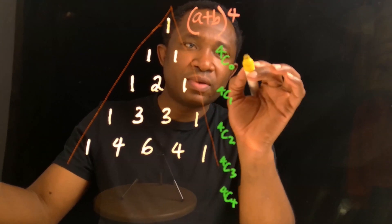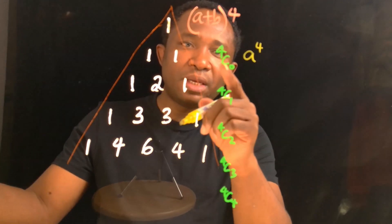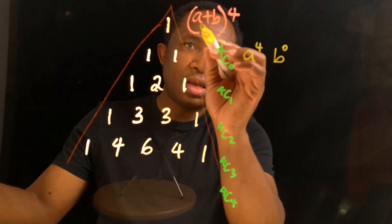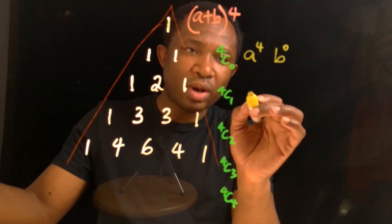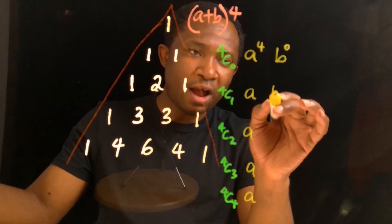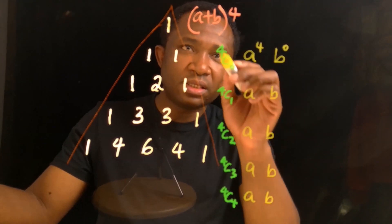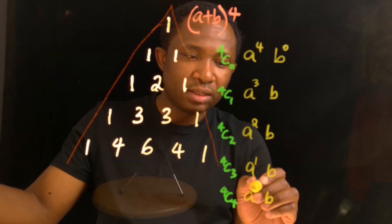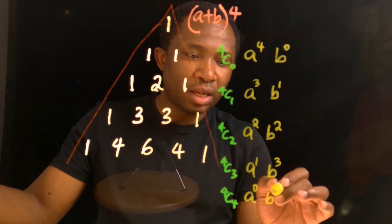Next, we write a to the power of 4 and b to the power of 0. Then a to the power of 3 and b to the power of 1. Then a squared and b squared. Then a to the power of 1 and b to the power of 3. Then a to the power of 0 and b to the power of 4. The powers of a go 4, 3, 2, 1, 0 and the powers of b go 0, 1, 2, 3, 4.